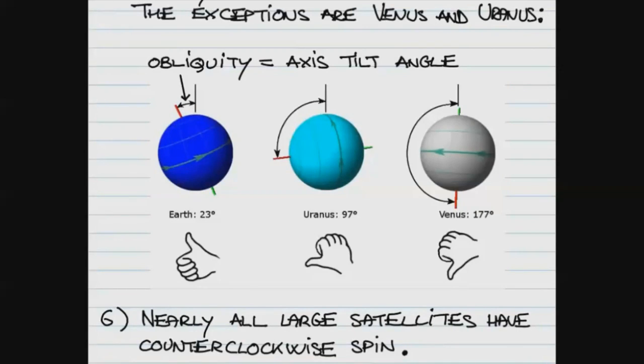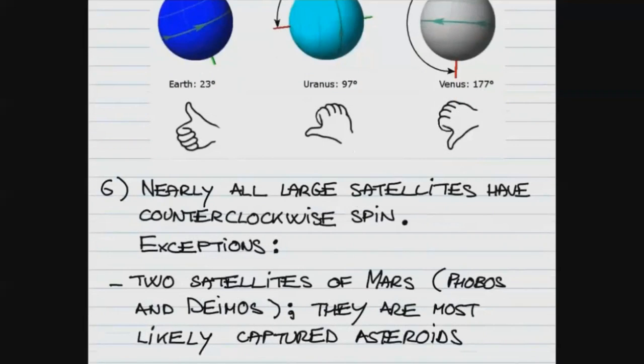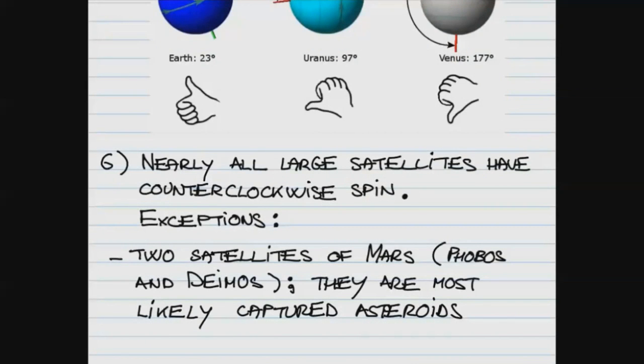Again, not only the planets, but nearly all large satellites have this counterclockwise spin. There are exceptions. The two satellites of Mars, Phobos and Deimos, fear and terror, they do not have a counterclockwise spin. But they are not like the satellites of other planets, including the Earth's satellite Moon. They are most likely captured asteroids. You will recall that the asteroid belt is the region between the orbits of Mars and Jupiter. It is possible that either due to Jupiter's gravitational force or interaction between the asteroids themselves, some of them get kicked to the inner part of the solar system.